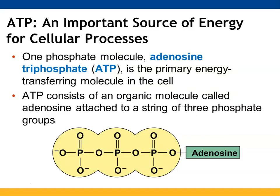ATP is your energy currency in the cell. When ATP is present and you need energy, you break off one of those phosphate groups to generate ADP and a phosphate ion. When that phosphate ion comes off, it also releases a significant amount of energy. When additional phosphates come around, they can bind back to ADP — the two phosphates attached to adenosine — and reform ATP.